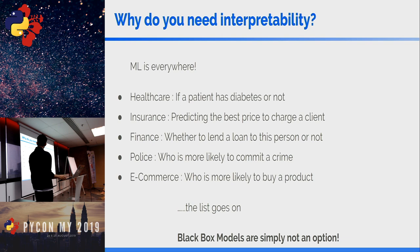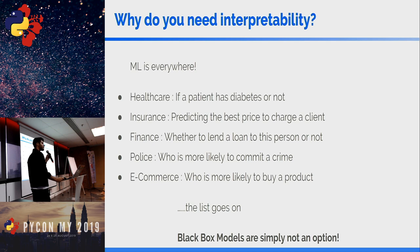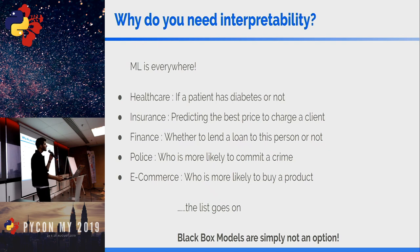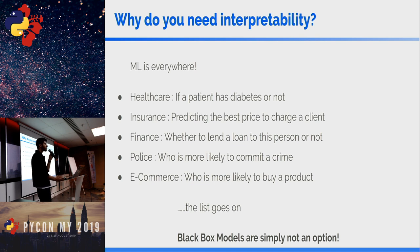In finance, you need to give a reason for charging a particular price to a client, or when building a model to decide whether to lend a loan. In law enforcement, machine learning is being used to predict who is more likely to commit a crime, but you cannot hold a person liable without an explanation just because a model flagged them. In healthcare and finance especially, with the rise of data protection laws like GDPR, model interpretation becomes even more important. In self-driving cars and healthcare, one inaccurate prediction can be quite costly.